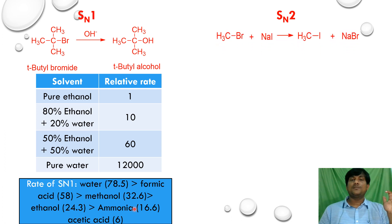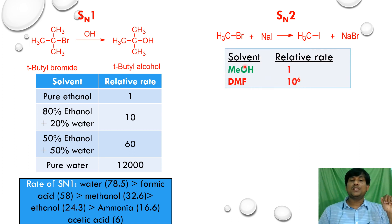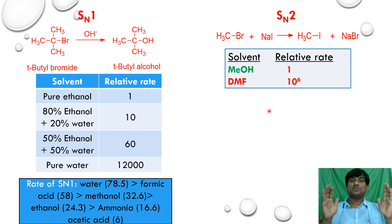For SN2 reactions, consider CH3Br with NaI forming CH3I. In methanol (a polar protic solvent), the relative rate is 1. When the polar protic solvent is replaced with the polar aprotic solvent DMF (dimethylformamide), there is a tremendous increase in rate — 10^6 times greater. The rate of SN2 in DMF is 10^6 times greater than in methyl alcohol.